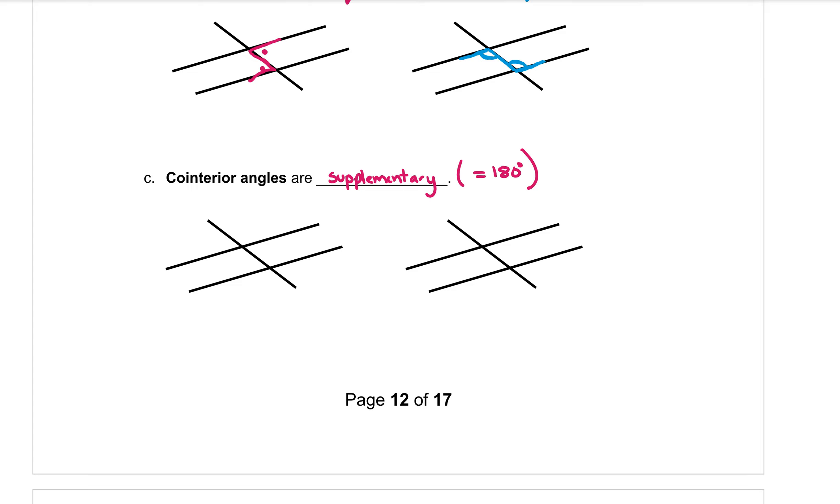Supplementary just means that those angles equal 180 degrees. Okay, when you see them on your diagrams they will form a C shape. Again, can be a normal C or it could be a backwards C. So let's draw a forward C first like this one here.